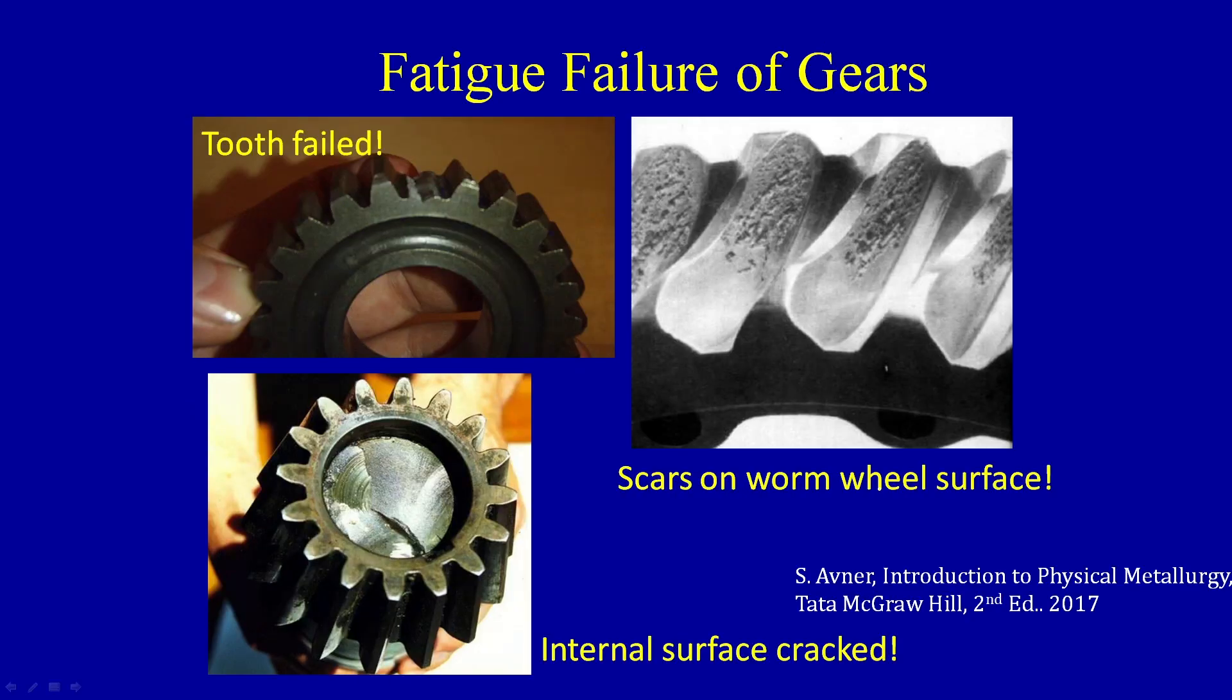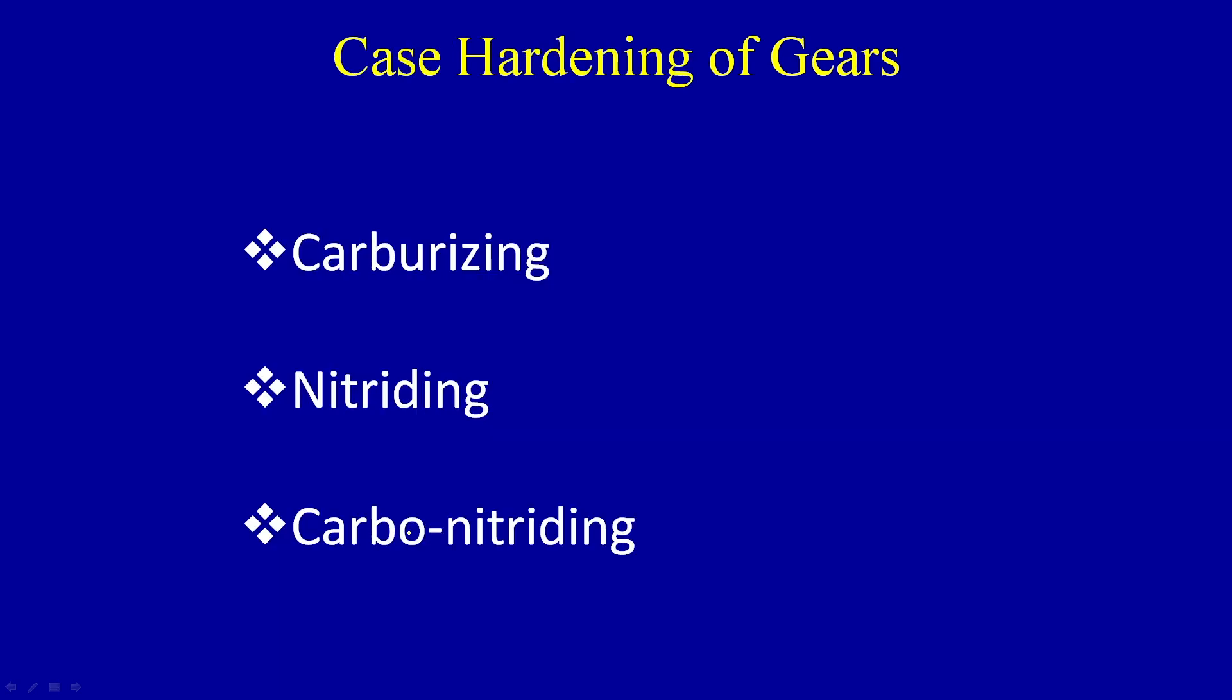How to take care of that? I showed you this particular view gap in the last lecture where many cases the tooth failed or has been worn out. You can see here, or you can have even internal cracks on the surface. These are typical failures we observe during operation. How to take care of that? There are three processes which can be adopted, all called case hardening: carburizing, nitriding, or carbonitriding.